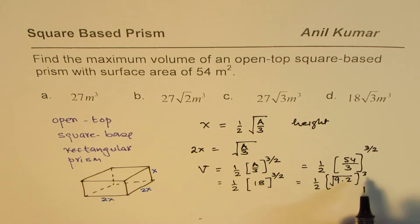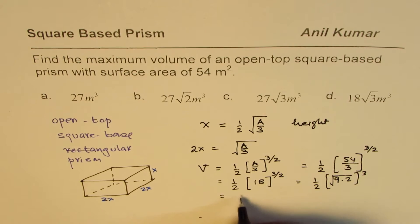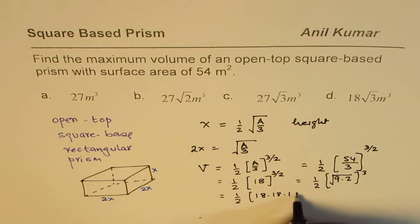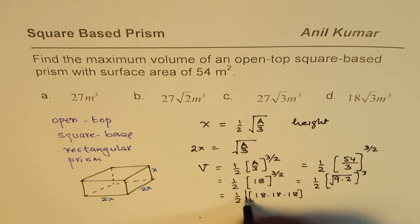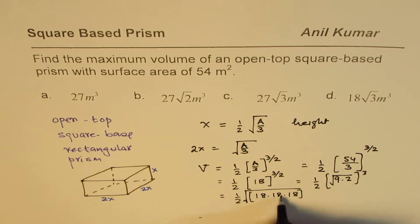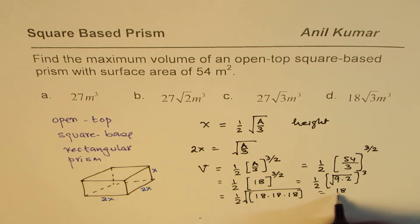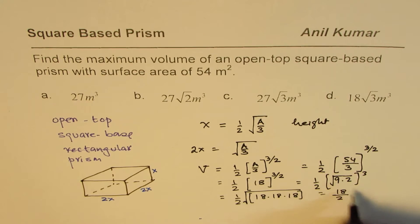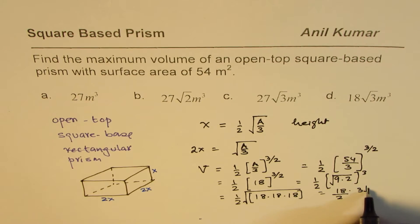So we have half of 18 times 18 times 18, and then you do square root. So two of them will come out, so you get 18 over 2 and square root of 18. As I was trying to do here, it is 9 times 3 square root 2.